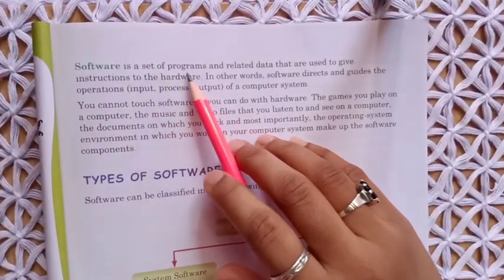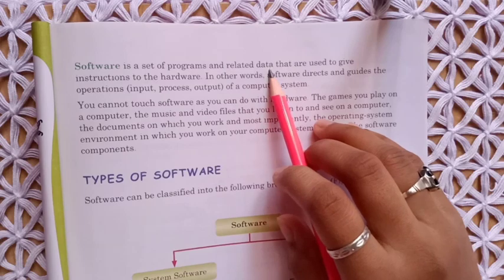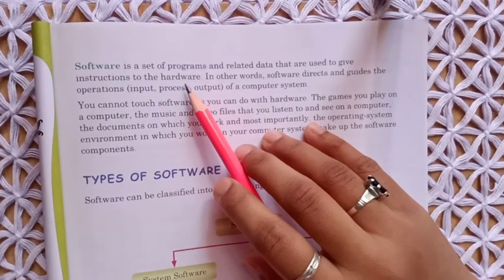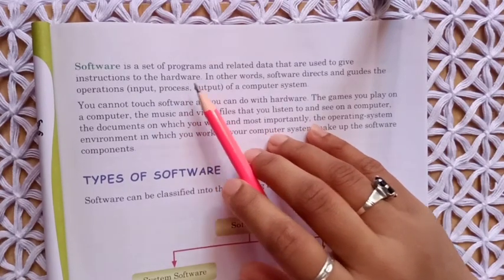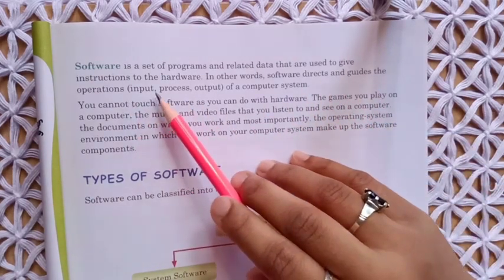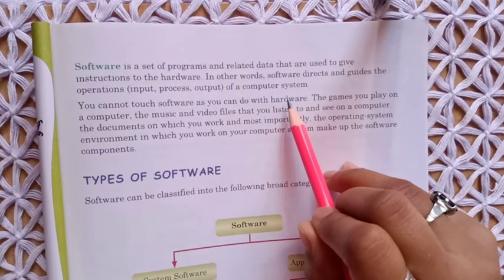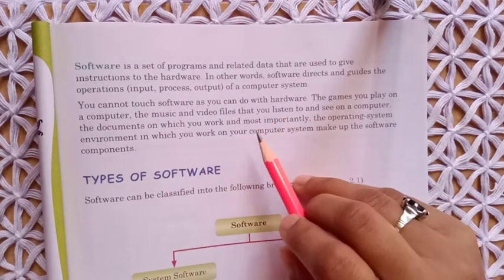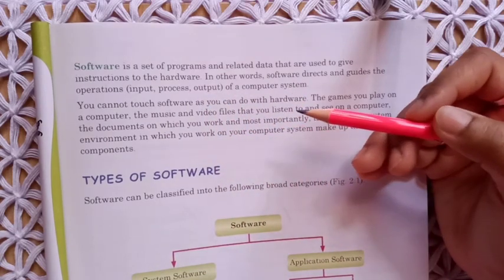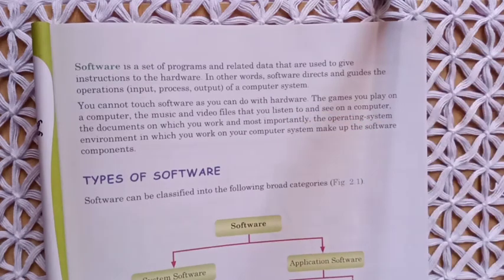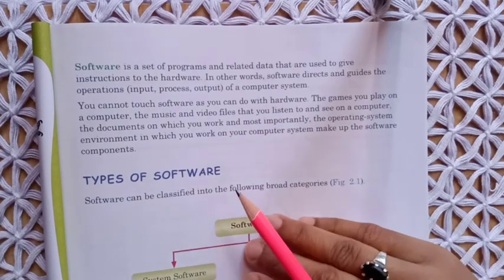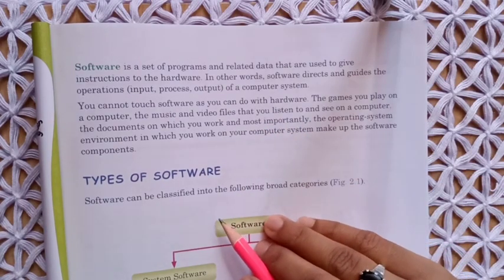In the same way, a computer also needs both hardware and software for performing any task. Software is a set of programs and related data that are used to give instructions to the hardware. Software directs and guides the operations — input, process, output — of a computer system. You cannot touch software as you can do with hardware.